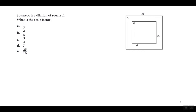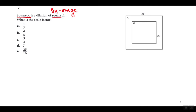Let's look at some examples that are going to be on your homework. It says square A is a dilation of square B — what is the scale factor? First, which is the pre-image and which is the image? Since square A is a dilation of square B, square B is our pre-image. Your starting point is square B; you're making square B bigger to get square A. So square A is the image and square B is the pre-image, meaning the scale factor has to be a number bigger than 1.